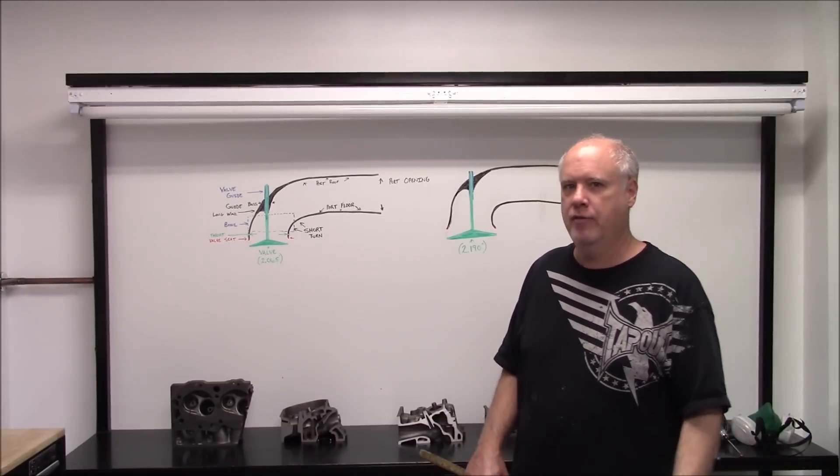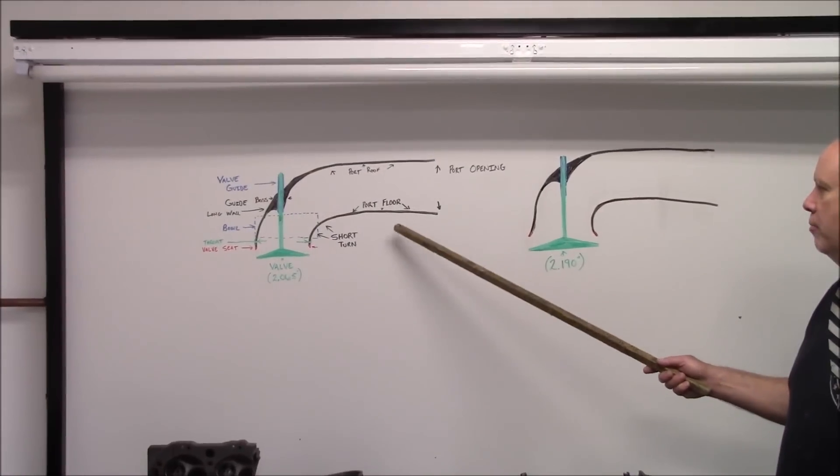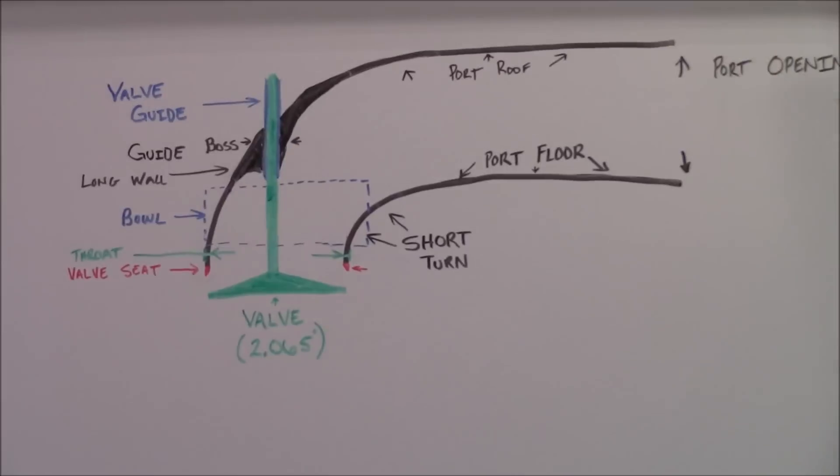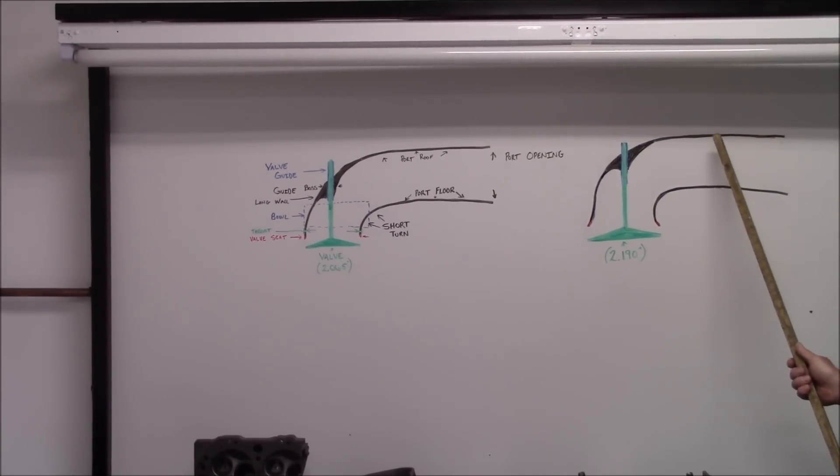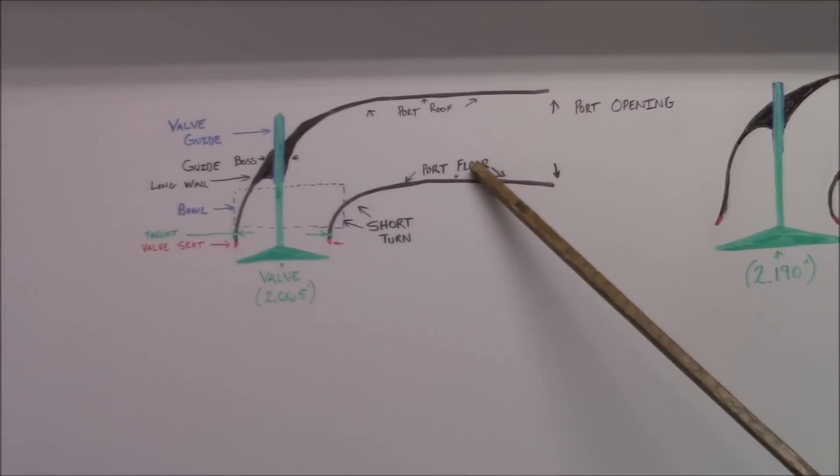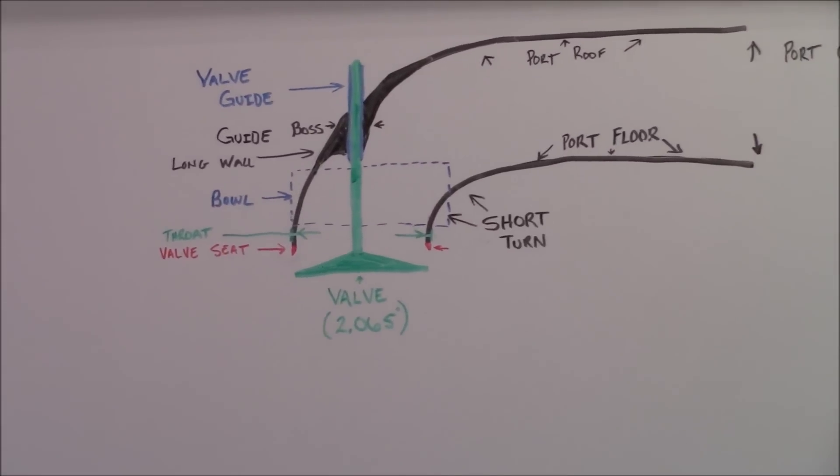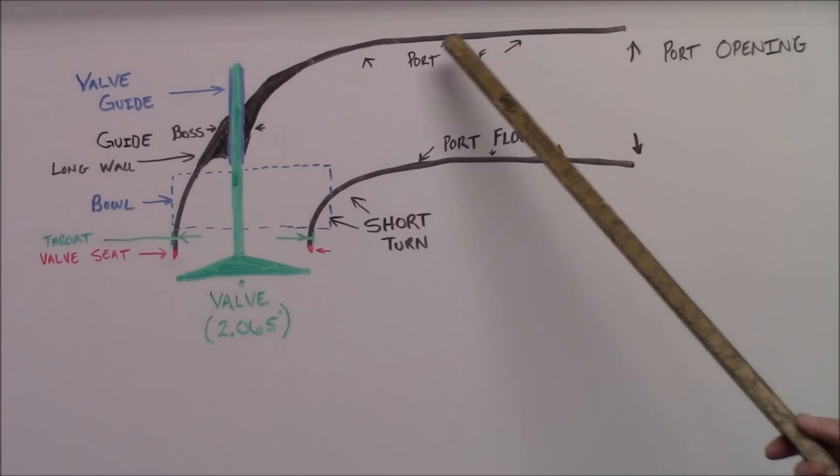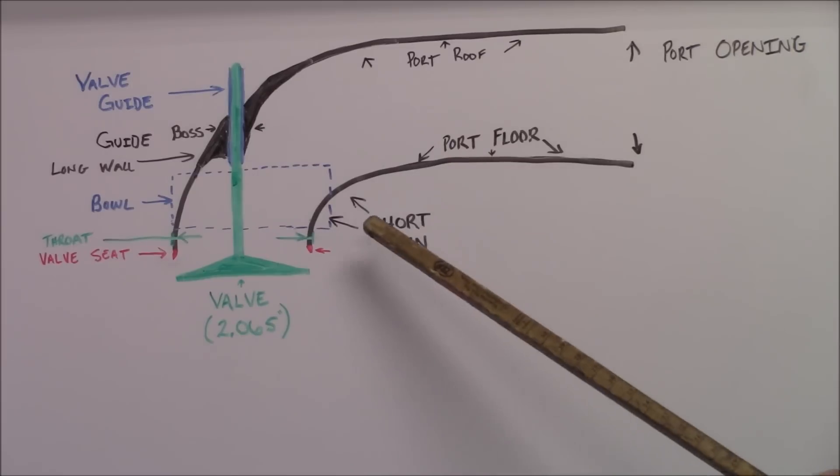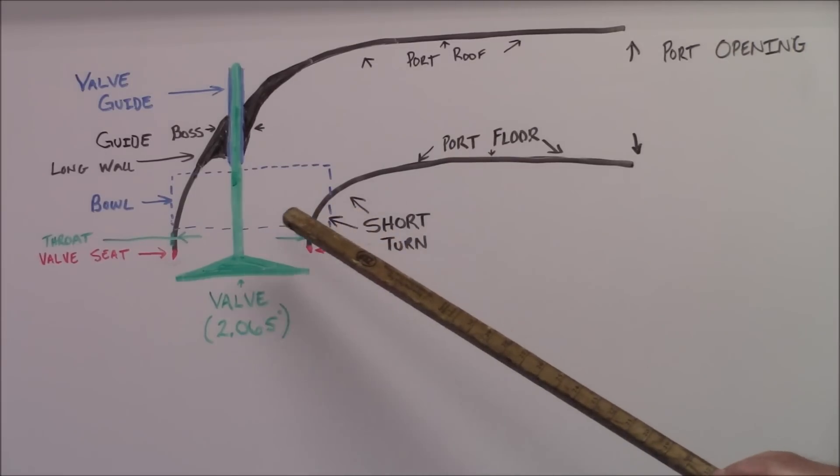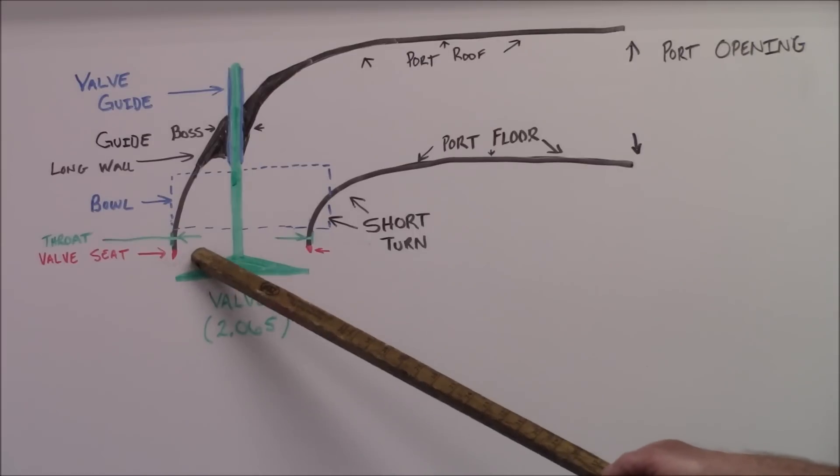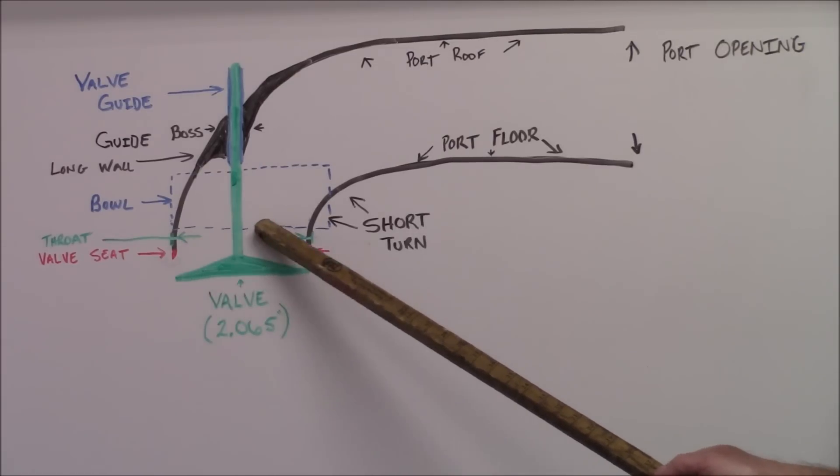What we have here is a cutaway view of the head unmodified with a 20650 intake valve, and after we put the 2190 intake valve in it. This is a side view of the port. What we have is the roof of the port, the port floor, the very important short turn. This is the bowl dimension right here, and of course the valve seat. The throat right below the valve seat.